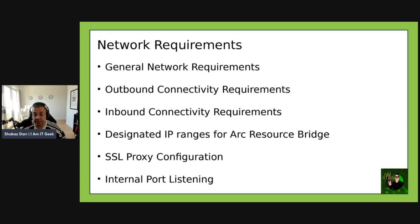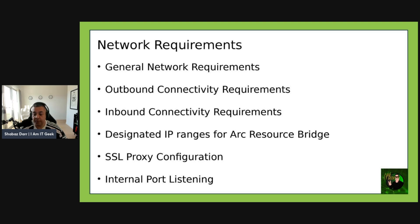From an outbound connectivity perspective, the firewall and proxy URLs listed in the documentation must be allowed to enable communication. For inbound communication, a certain number of ports — including port 22 and 6443 — need to be allowed from the management machine and appliance VMs, and the control plane IP must have all these ports open. The Arc resource bridge Kubernetes pods are on the 10.244.0.0/16 IP address subnet, and the Arc resource bridge Kubernetes services are on 10.96.0.0/12.